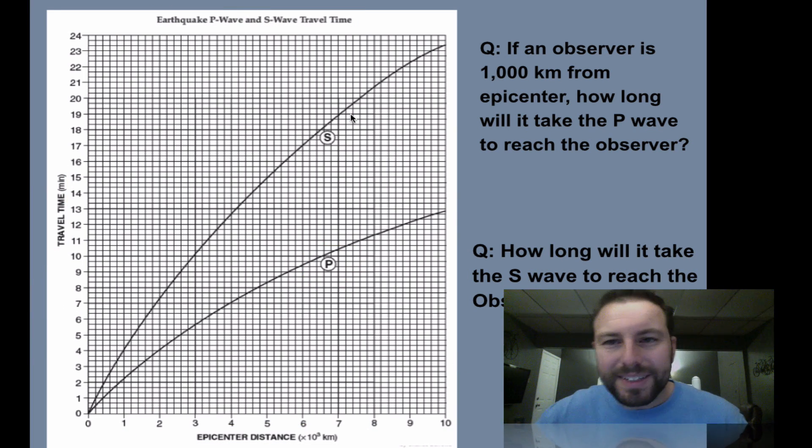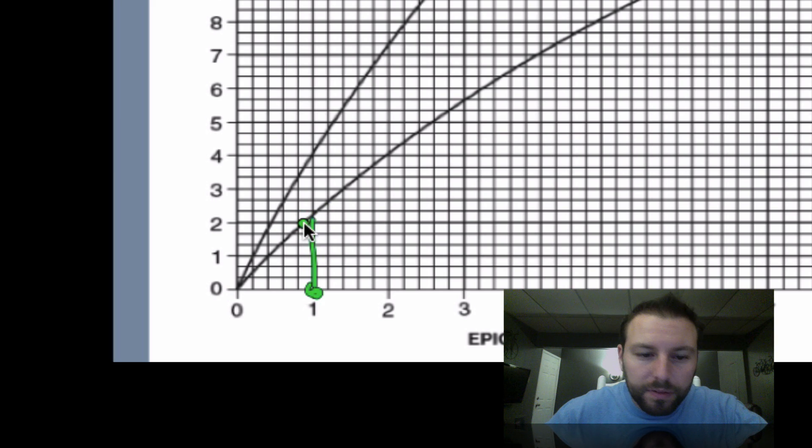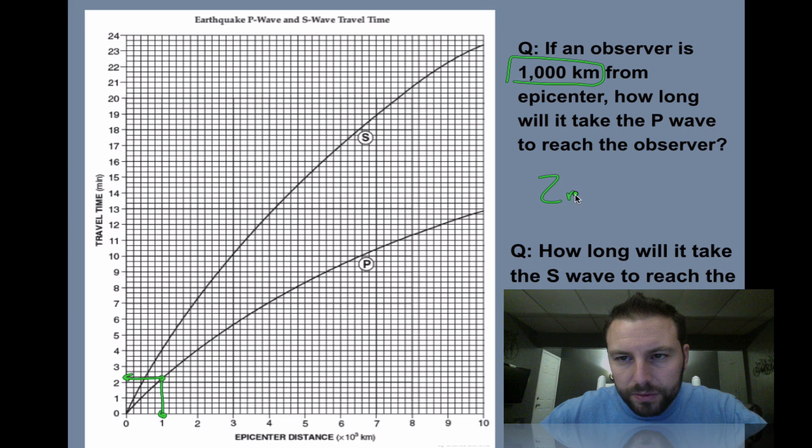If an observer is 1,000 kilometers away from the epicenter, how long will it take for the P wave to reach the observer? Well, we see that we are 1,000 kilometers away from the epicenter. So we can go down to our bottom, 1,000. We draw a line up to where it hits our primary wave, and in typical fashion, we can go over to the left, and that would be 2 minutes and 20 seconds.